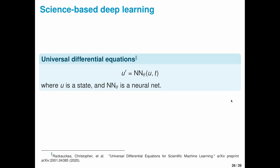This is also part of a broader trend towards science-based deep learning. So universal differential equations provide one example. The key idea here is that you parameterize a differential equation using a neural network. And in this framework, just as with neural hierarchical models, you can retain the dynamics that you know and approximate the dynamics that you don't know.